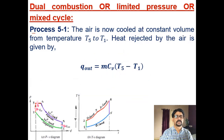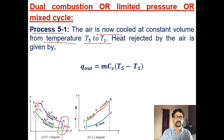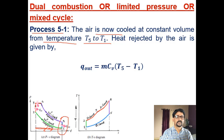The concluding process 5 to 1 completes the cycle: the air is cooled at constant volume from temperature T5 to T1. Ideally, this represents the opening of the exhaust valve and drop in pressure from P5 to atmospheric pressure, followed by the exhaust stroke and suction stroke. Heat rejection during process 5 to 1 is Q_out = m·Cv·(T5 − T1).